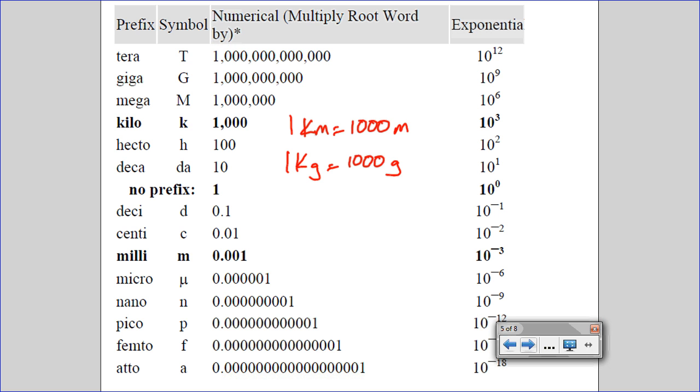One kilometer equals 1,000 meters. One kilogram equals 1,000 grams. One gram equals 1,000 milligrams.